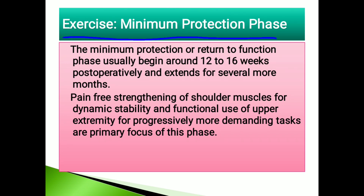The final stage is the minimum protection phase, or return to function phase. This phase usually begins at 12 to 16 weeks post-operatively and extends for several more months. The focus is pain-free stretching and pain-free strengthening of shoulder muscles for dynamic stability — so that muscles provide stability during joint movement — and functional use of the upper extremity for progressively more demanding tasks.